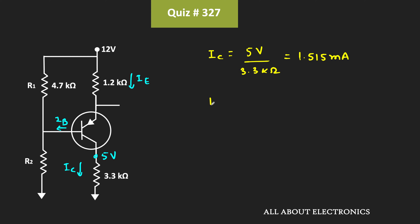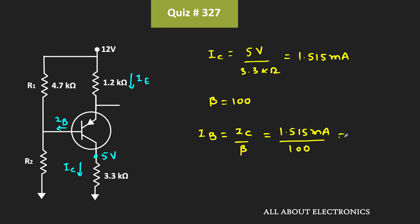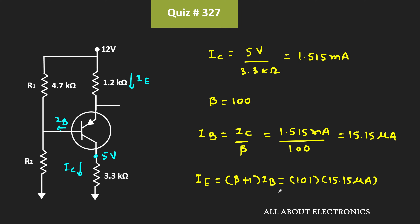We have been given that β is equal to 100. That means the base current IB will be equal to IC divided by β, that is 1.515mA divided by 100, which is equal to 15.15μA. Moreover, the emitter current will be equal to (β + 1) times IB, that is 101 times 15.15μA, which is equal to 1.53mA.